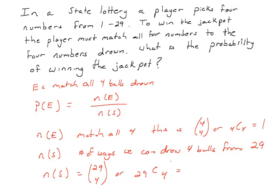So n(S) is going to be 29 choose 4, or 29C4. Using our definition for combinations, we have 29 factorial divided by 4 factorial times 25 factorial.